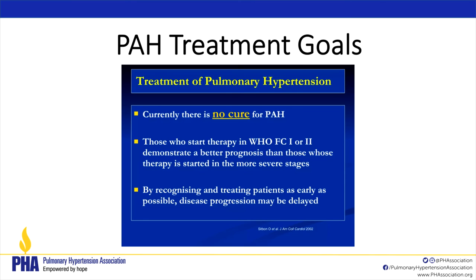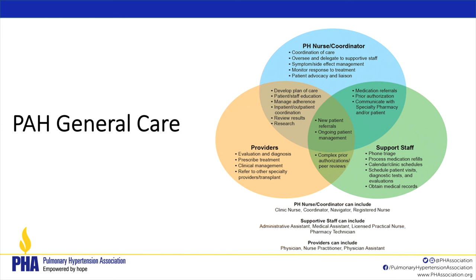Your general care involves an overlapping team: your PH nurse, coordinator, providers, and support staff — all equally important. You'll get to know your PH nurse, nurse practitioner, and physician fairly well, but other providers are just as important — for example, a rheumatologist if you have connective tissue disease. We may also send you to cardiac rehab or pulmonary rehab. Make sure you have a well-rounded team around you — it will make you more successful.